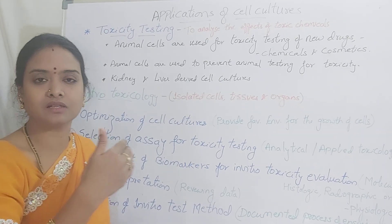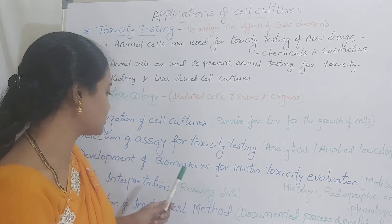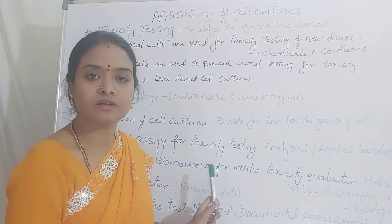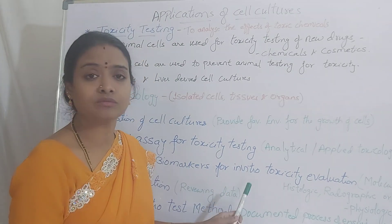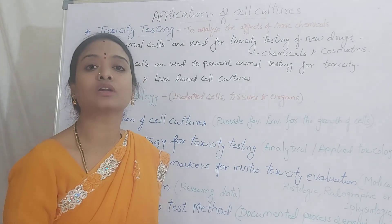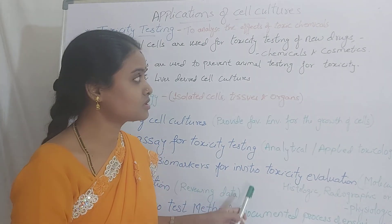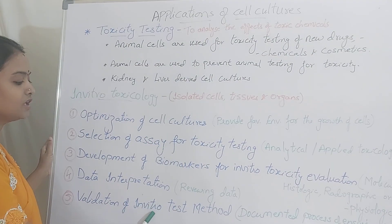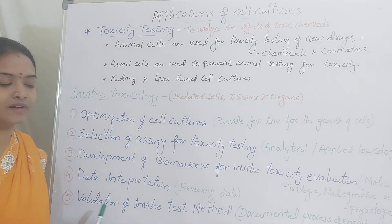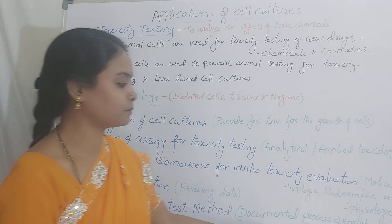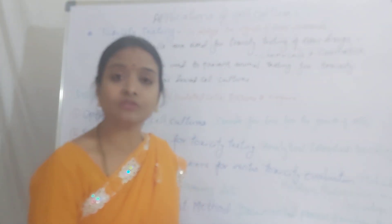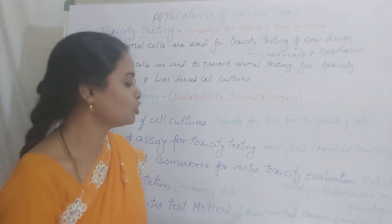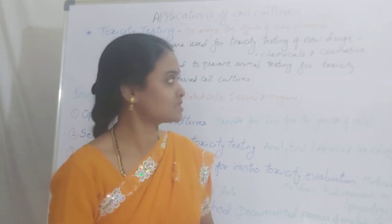After performing the practical, you get the result. That is data interpretation — reviewing the data, finalizing, and concluding the toxicity levels of the particular drug. The last step is the validation method. Validation is nothing but a documented process of ensuring the test. The method, equipment, and chemicals you are using must be documented for that particular toxicity testing.